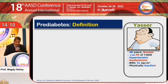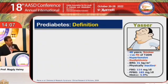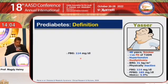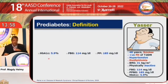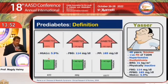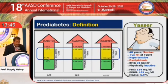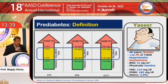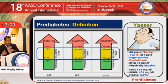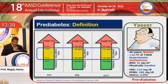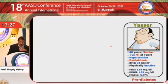One day, Yasser called me to say he had checked his blood glucose. His fasting blood glucose is 114, the post-prandial is 165, with an A1C of 5.9. He asked whether he was diabetic with this range. I told Yasser he is in the gray zone between normal glycemia and the threshold for diagnosis of type 2 diabetes — he is pre-diabetic.